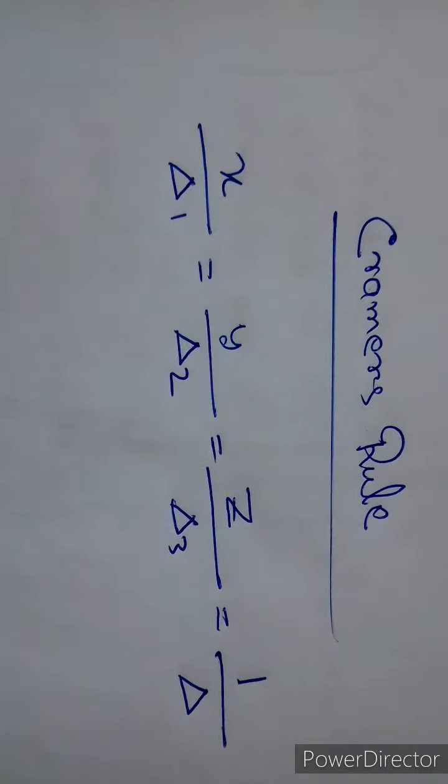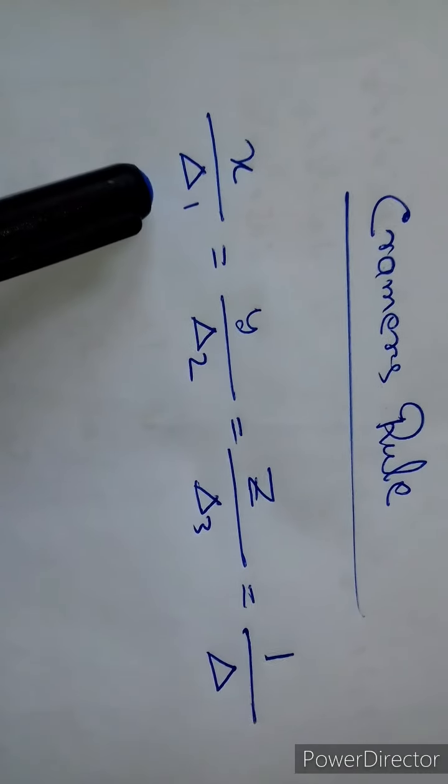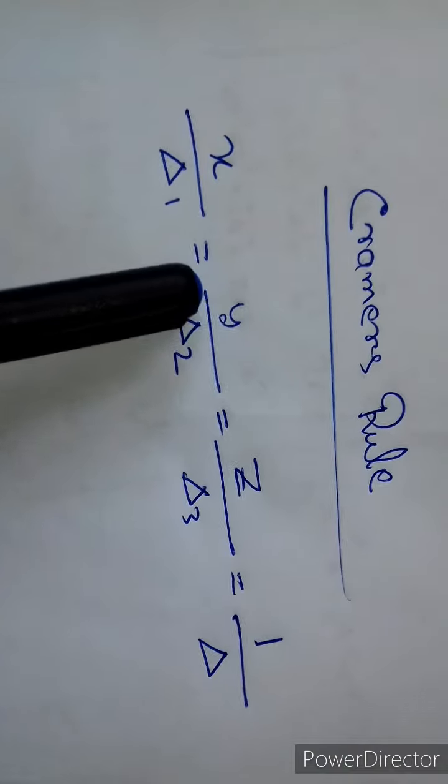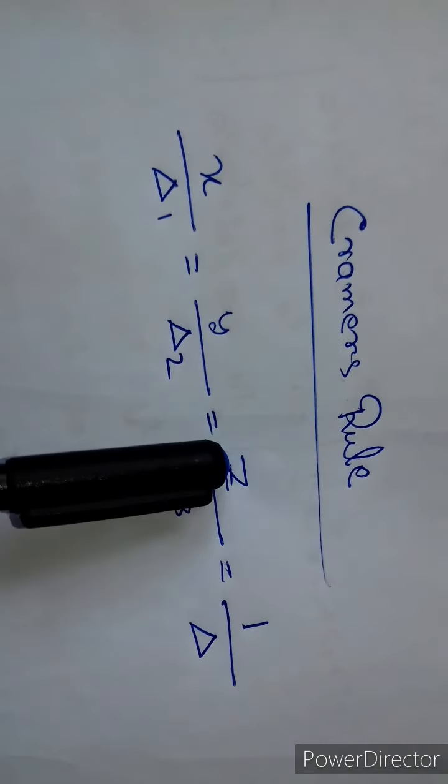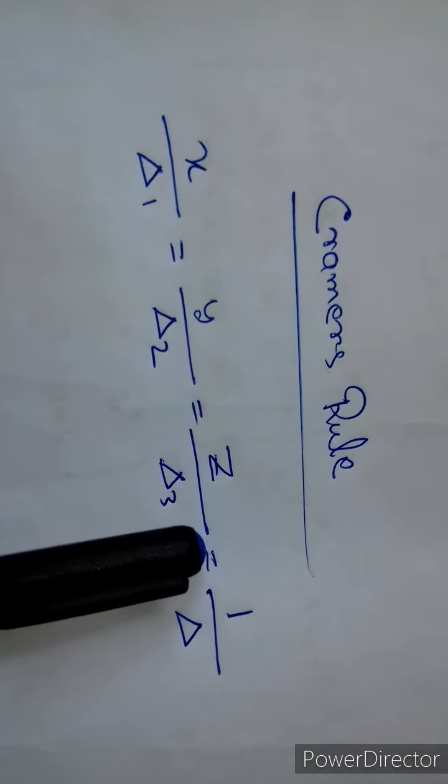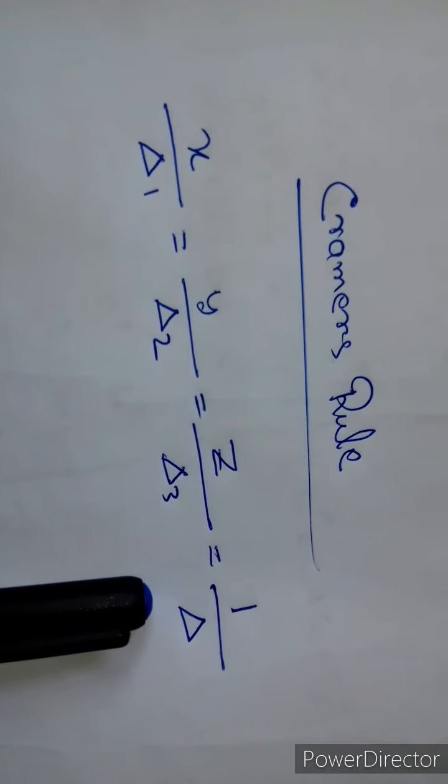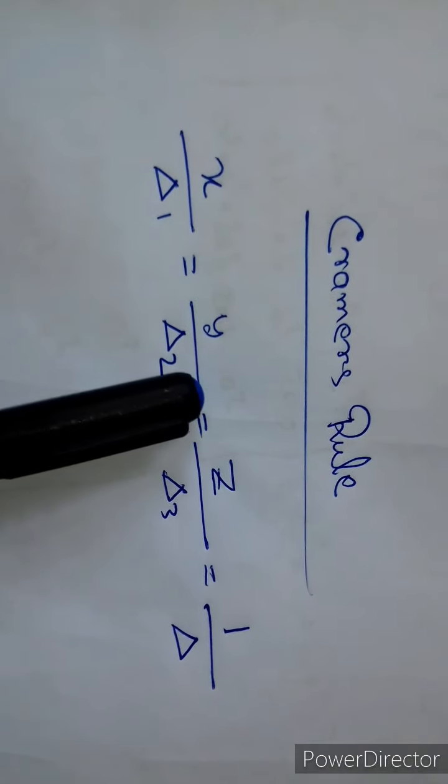Cramer's Rule formula: x by del_1, y by del_2, z by del_3 equals 1 by del. This is Cramer's Rule.